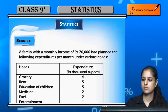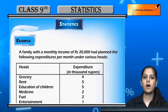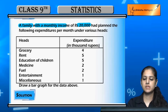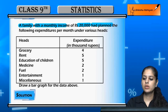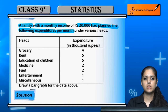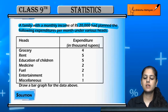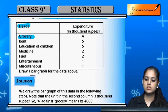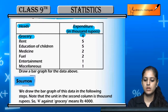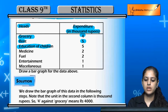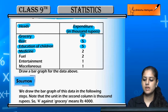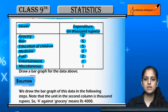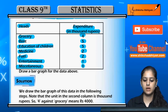Now let us see an example. A family's monthly income is 20,000 rupees. They decide their expenditures under some heads: grocery for 4,000 rupees, rent for 5,000, education of children for 5,000 per month, medicine for 2,000 per month, fuel for 2,000, entertainment for 1,000, and miscellaneous activities for 1,000.